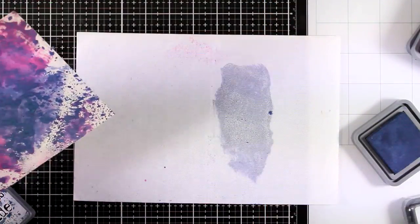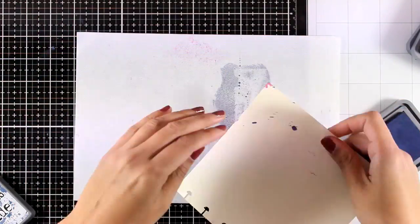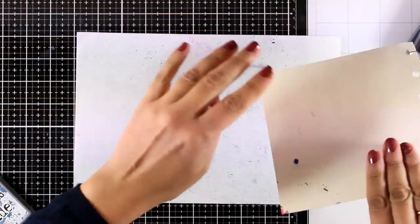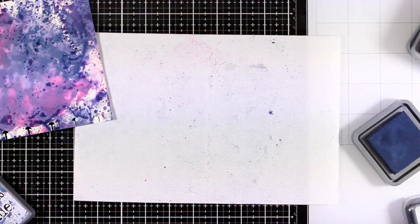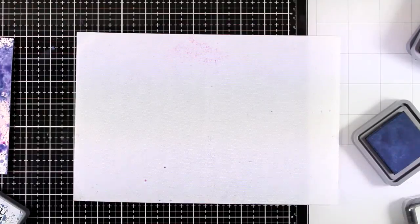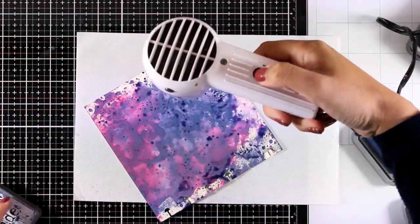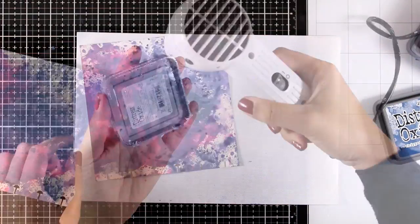Now I have applied on my mat only Chipped Sapphire and I'm going to dab my page there just because I want to darken it up a little bit and I feel like I have enough of that purple on my page. Now I'm going to make sure that this layer is also dry and then I will move on to a next layer.